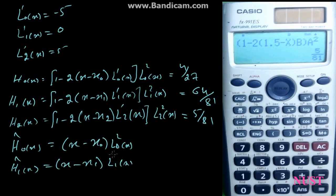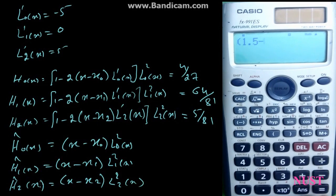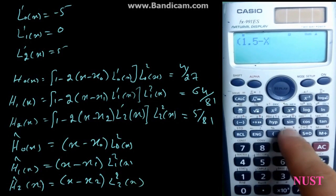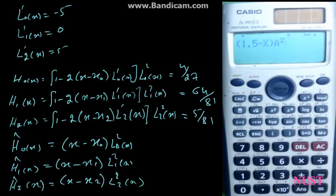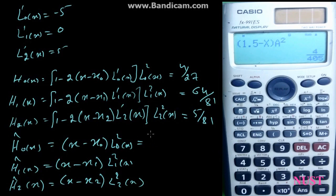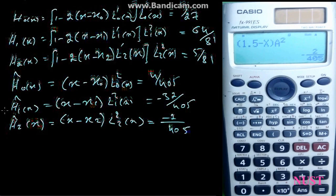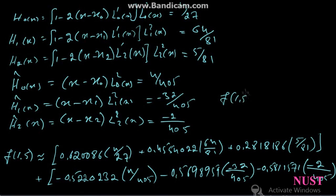Similarly compute h0-hat, h1-hat, and h2-hat. x is constant at 1.5, and a represents L0, L1, L2 as general terms. Entering x0 as 1.3 and L0 as 2 over 9, we get h0-hat equal to 4 over 405. h1-hat equals minus 32 over 405, and h2-hat equals minus 2 over 405. Adding up all the terms using the Hermite formula shown at the opening, we get f of 1.5, which is approximately 0.5118277.